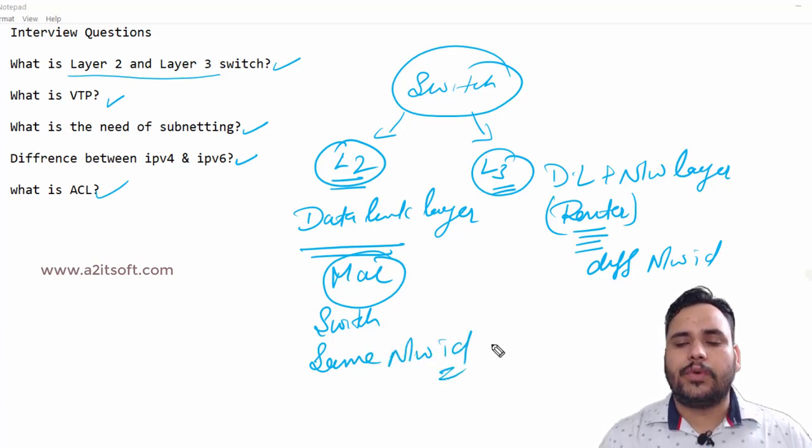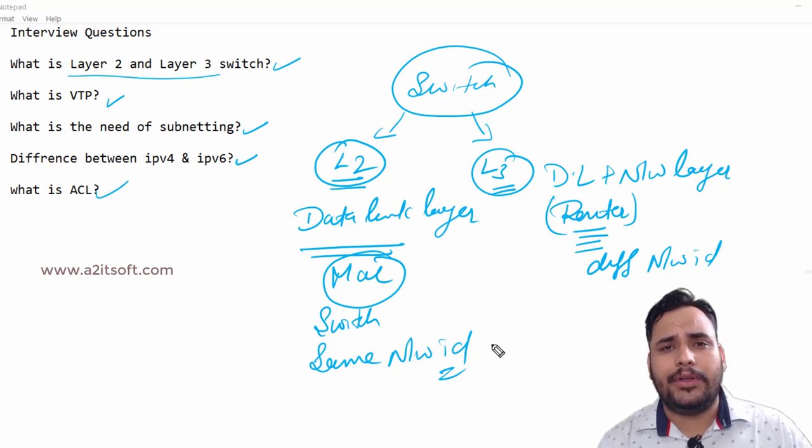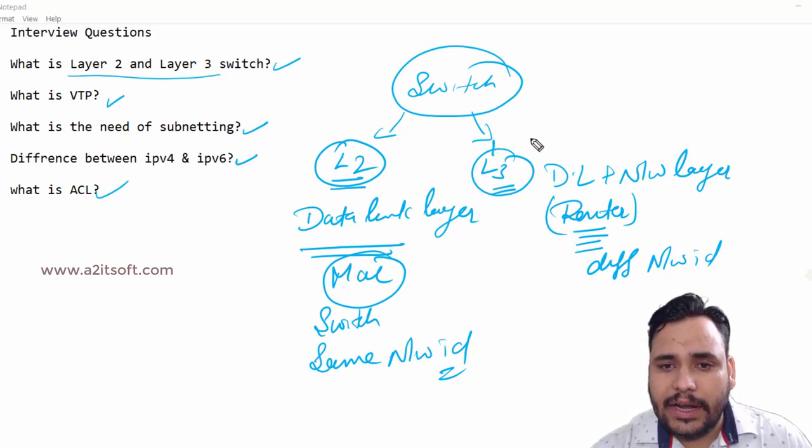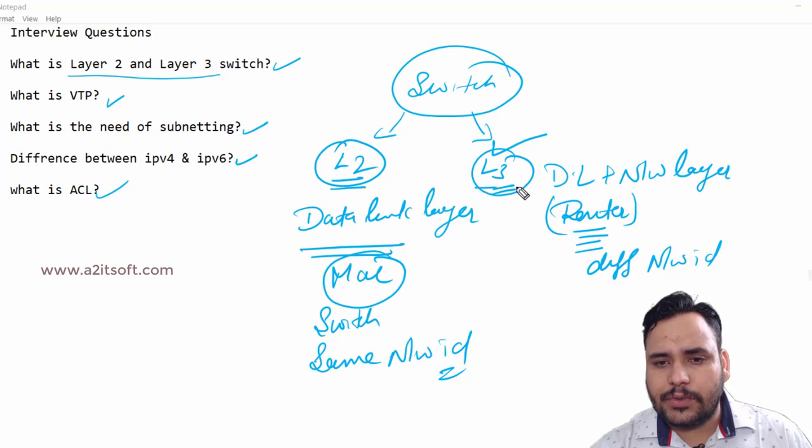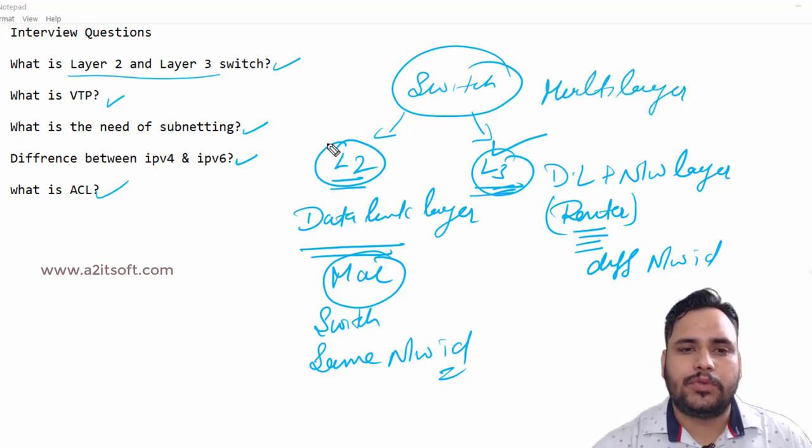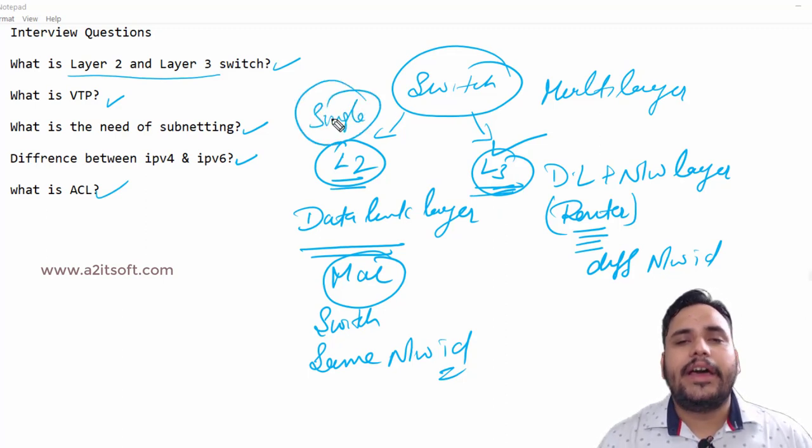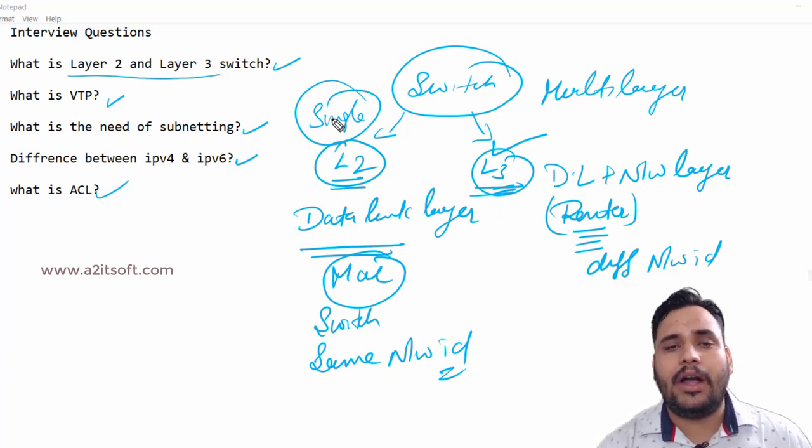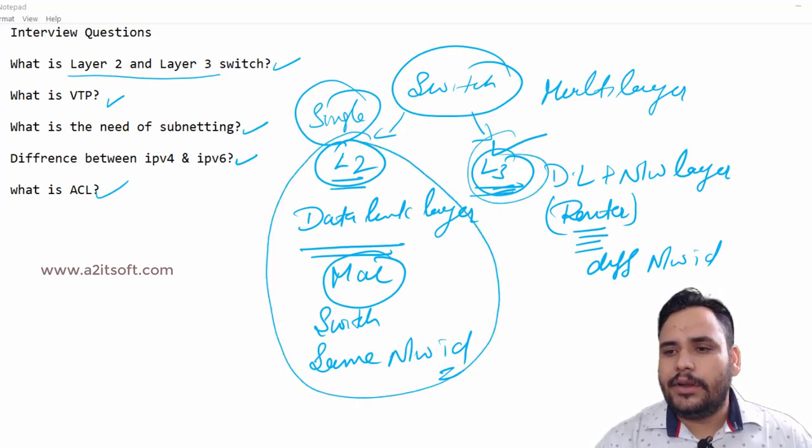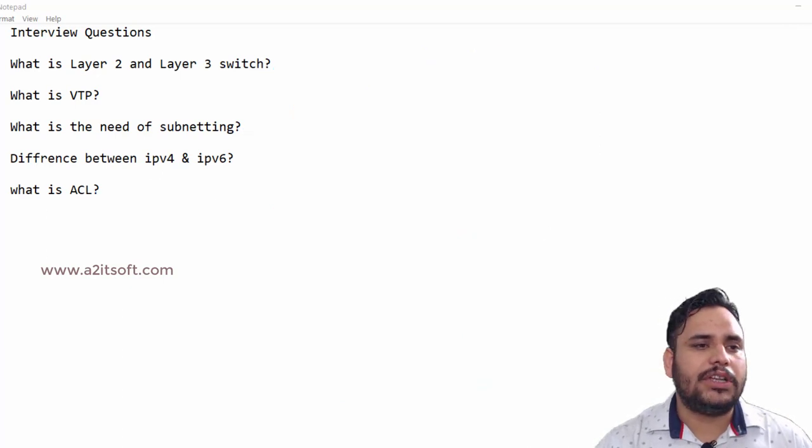Layer 3 switch works as a router. For example, in your company if you don't have any router, you can transfer your traffic from one network to another network with the help of Layer 3 switch. Layer 3 switch is also known as multi-layer switch and Layer 2 switch is known as single layer switch. The functioning of switch remains same in both switches - first time broadcast and after that unicast. These are the basic differences between Layer 2 and Layer 3 switch.